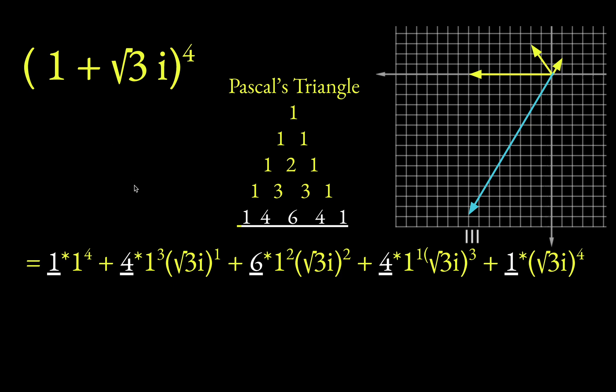And then I reduced the power on the 1. So this is 1 cubed. And I raised the power on root 3i from what was 0 here. Now it's a 1. And so you notice this exponent on the root 3i is climbing from 1 to 2 to 3 to 4 by the time you get over here.